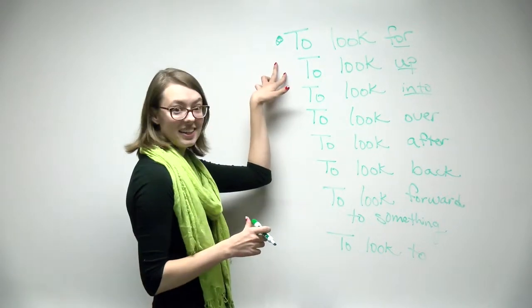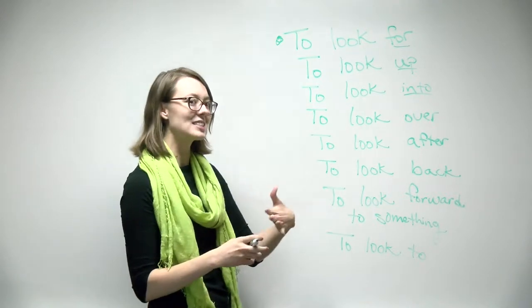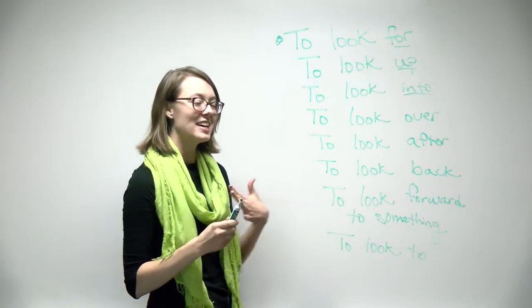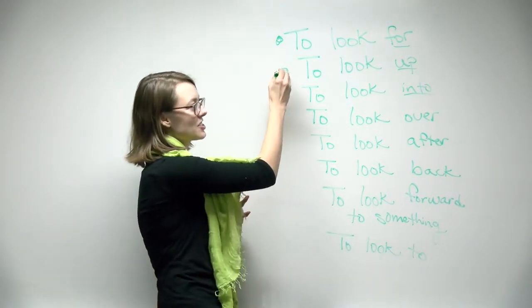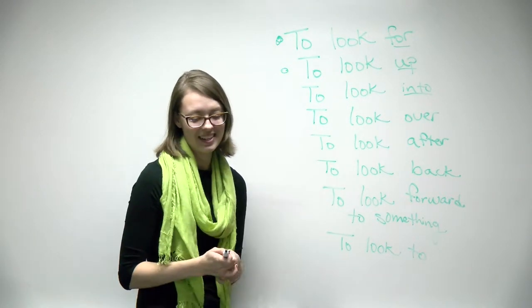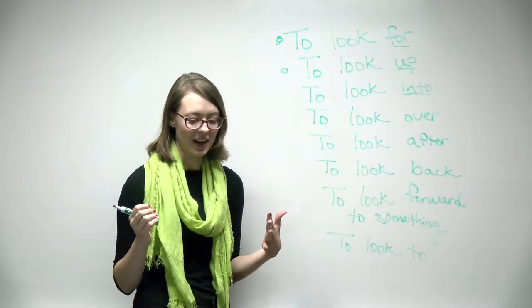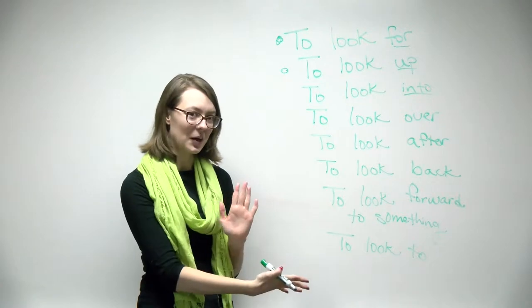The second one is to look up something, like to look something up on the internet. This pertains to trying to find information about something. Some example sentences, look up the phone number for Domino's or I looked up this article on Wikipedia.